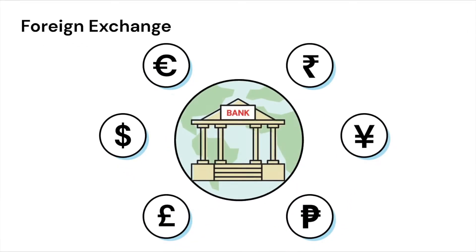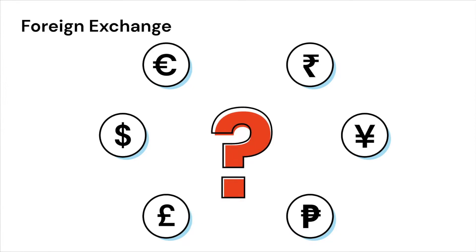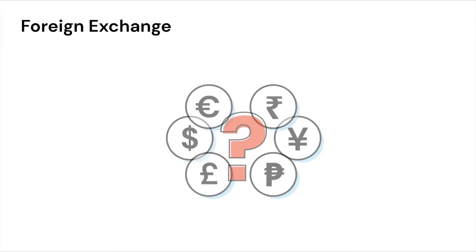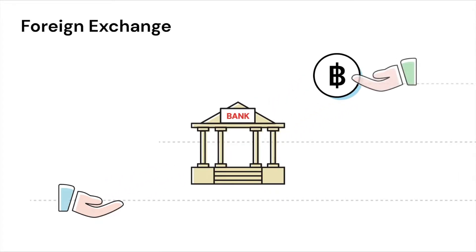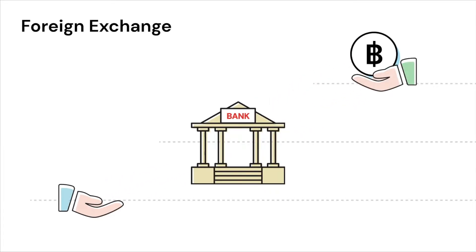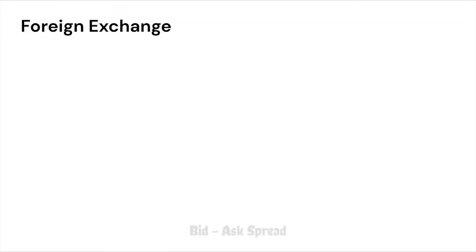How do banks make money on exchange rates? Banks are the largest dealers of foreign exchange globally. They profit from transacting in foreign exchange simply by buying at a low price from one customer and selling at a high price to another customer. This is called the bid-ask spread. Exchange rates are quoted in bid-ask terms.